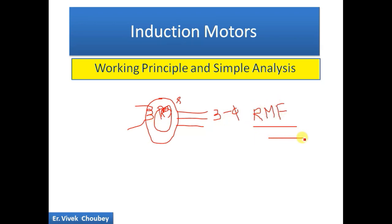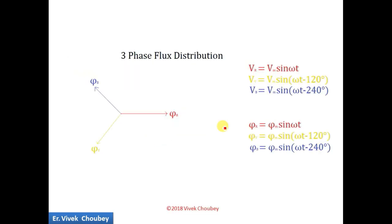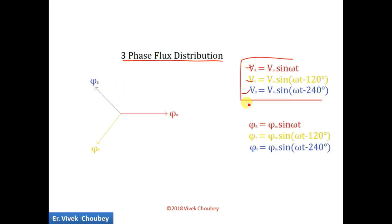Now we are going to see what is rotating magnetic field, how it links with the rotor, and how the rotor begins to rotate. Before going ahead to the working principle, we need to understand the rotating magnetic field. On the screen you can see I have drawn the three phase flux distribution. Our three phase supply is VR, VY, and VB. VR is Vm·sin(ωt), VY is Vm·sin(ωt − 120°), and VB is Vm·sin(ωt − 240°).